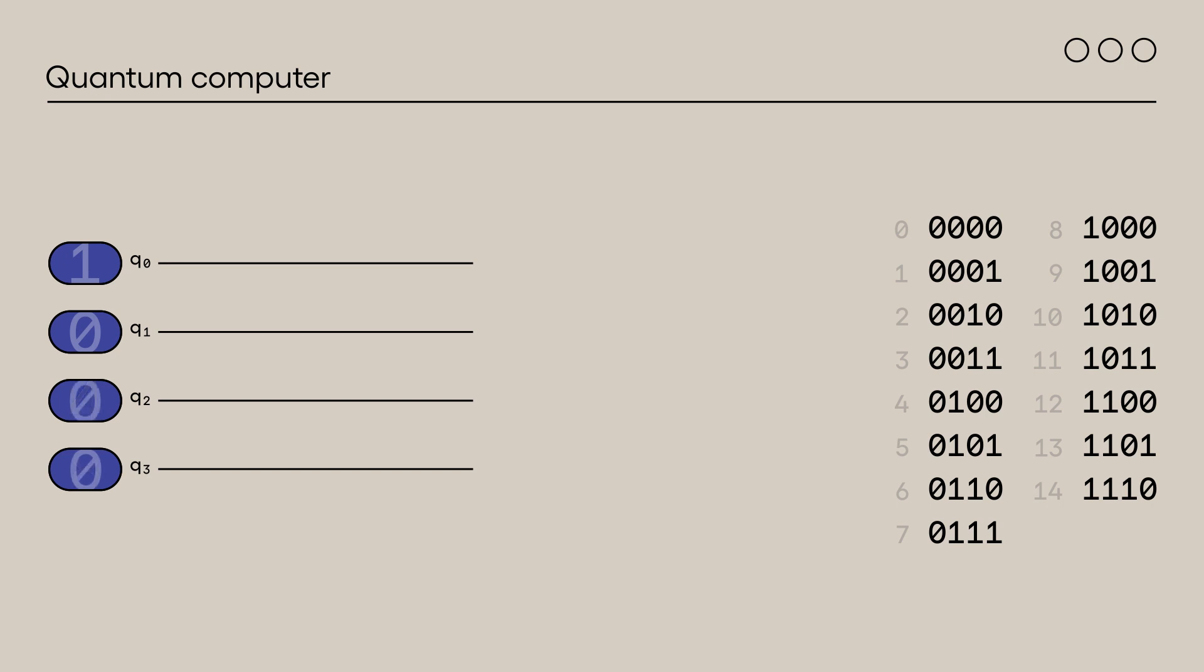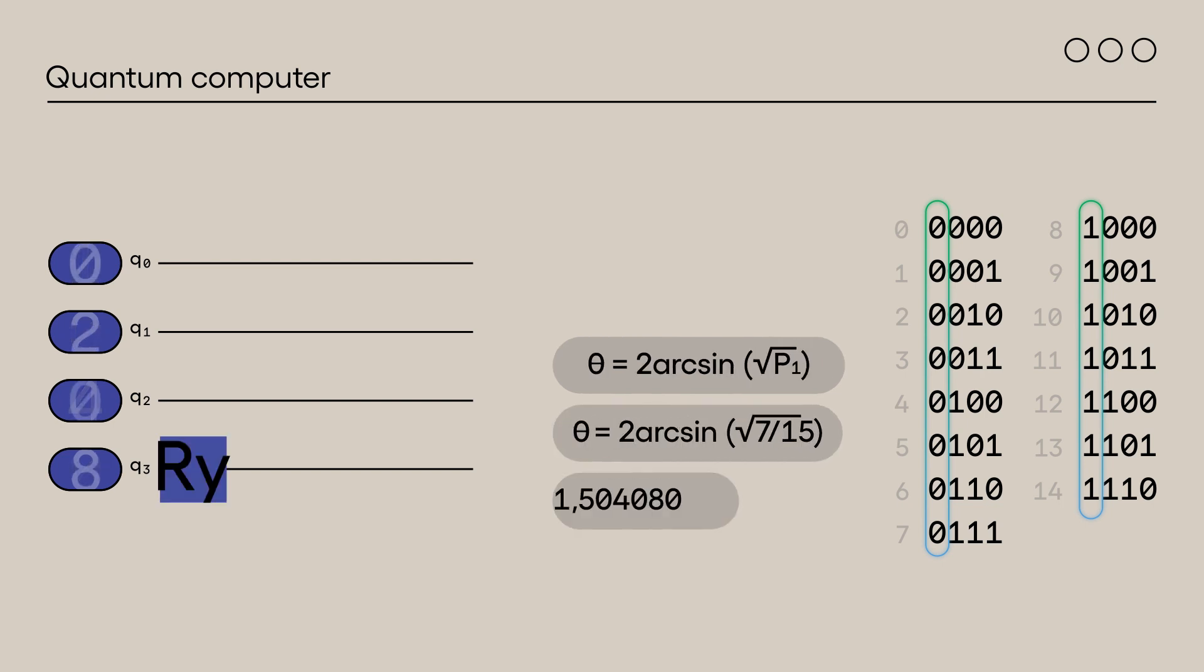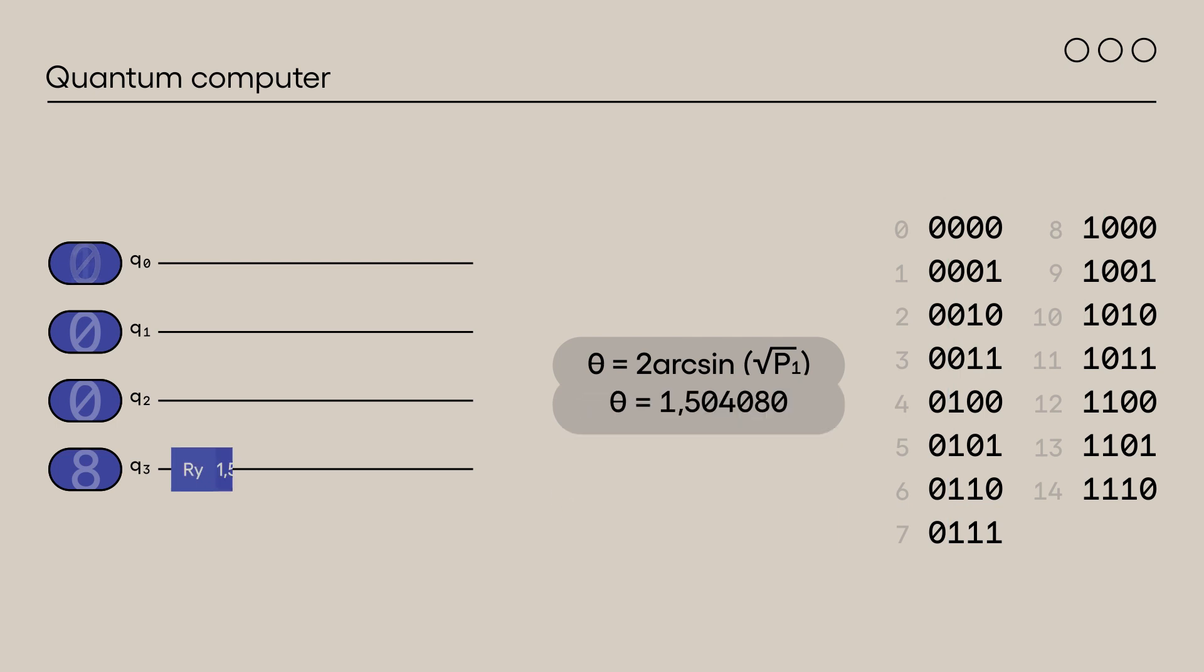Let's divide the 0 to 14 binary representations into two columns. The 8 numbers whose bit 3 is 0 in the left column and the 7 remaining numbers in the right column. We need to place qubit 3 in a state that measures 0 with a probability of 8 out of 15 and 1 with a probability of 7 out of 15. The angle theta which corresponds to p1 equals 7 over 15 is. We notice that for the 3 bits following the 0 in the left column, the 2 to the 3 equals 8 combinations of 0 and 1 are present.